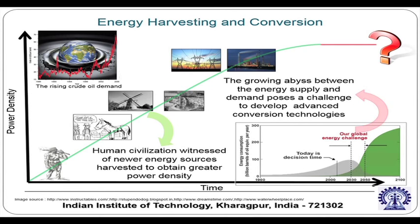As a general note, human civilization has witnessed newer energy sources harvested to obtain greater power density as we have progressed in civilization. The advancement in technology has demanded energy conversion capabilities with a greater power density. For example, electrical and electronic gadgets have become miniaturized without sacrificing their power rating, so the power density is significantly increased as we have gone for handheld and miniaturized devices.